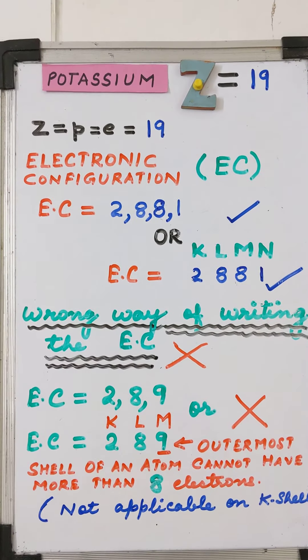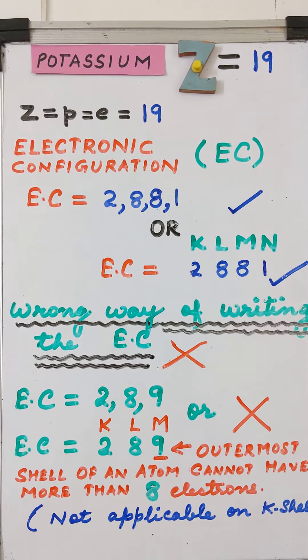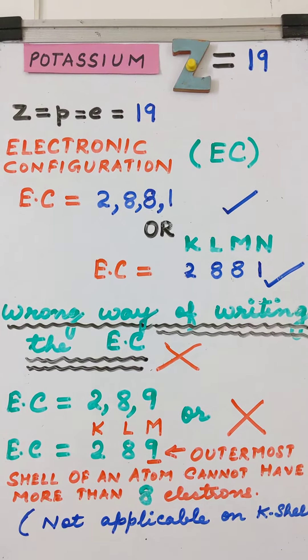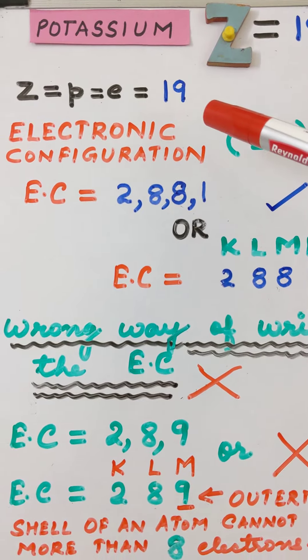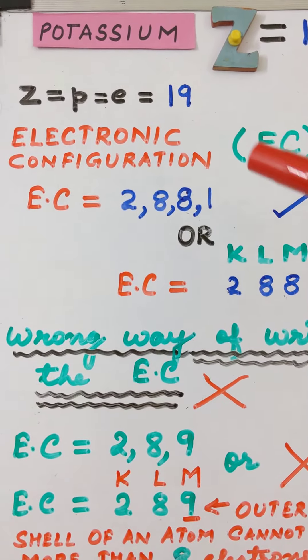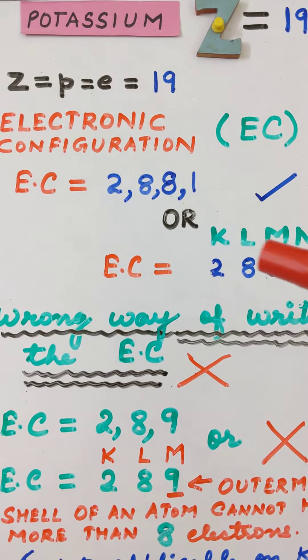Let us try to understand the electronic configuration of the 19th element, that is potassium. Potassium has an atomic number Z of 19, therefore the number of electrons in potassium are also 19.